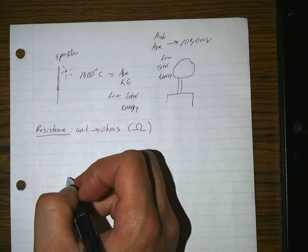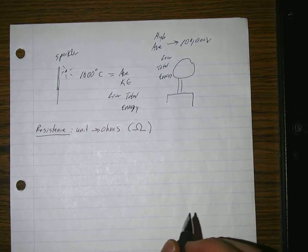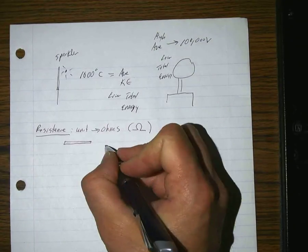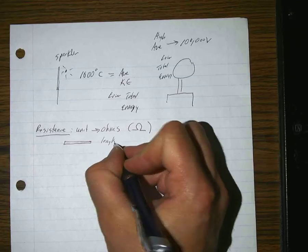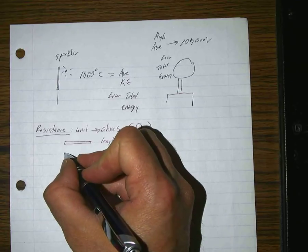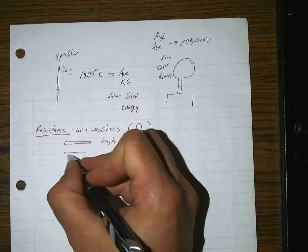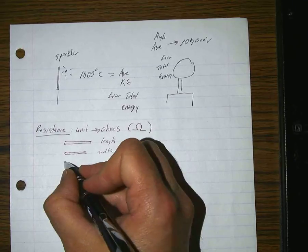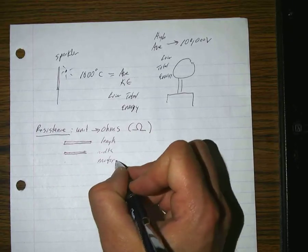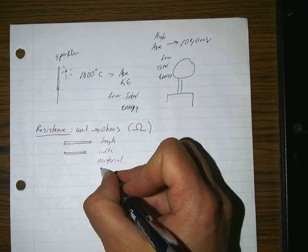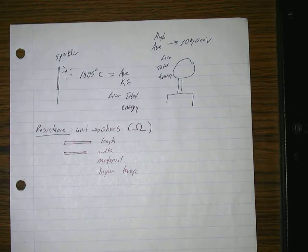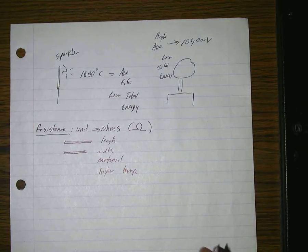We did several ranking tasks about what actually affects the amount of resistance. We said if you have a longer wire, you'll have more resistance. If you have a skinnier wire, you'll have more resistance. If it's made of a different material, you'll have more resistance. And if it has a higher temperature, you'll also have more resistance. So those physical things affect the amount of resistance that's in a wire.